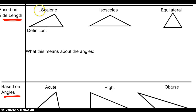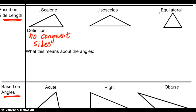There are three kinds: scalene, isosceles, and equilateral. A scalene triangle is a triangle with no congruent sides — none of the sides are the same length. So if you're going to make up some numbers, maybe this is 3 centimeters, this is 4 centimeters, and this is 5 centimeters — none of them are the same size.